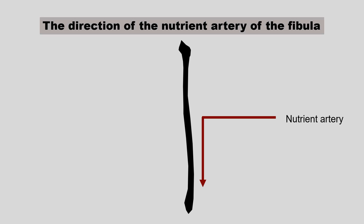In the fibula, the direction of the nutrient artery is towards the lower end. As we already know, the growing end of the bone lies opposite to the direction of the nutrient artery. Here in the fibula, the nutrient artery is directed towards the lower end, so the opposite end — that is, the upper end — would be the growing end.